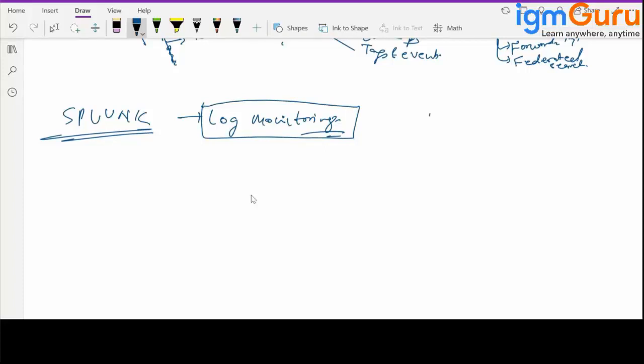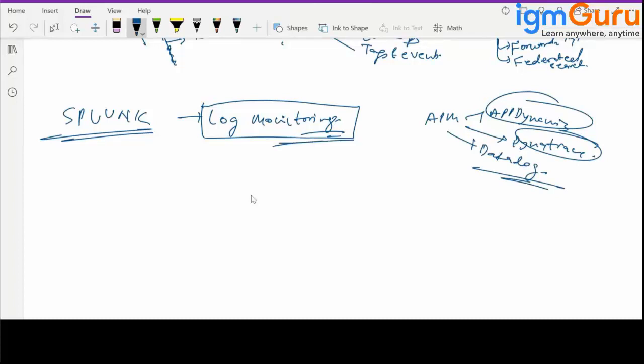If you talk about APM application performance monitoring, you have multiple like AppDynamics, Dynatrace, and a lot of other tools which are specialized in the APM part, or Datadog. But for log monitoring we have Splunk that is the expert or you can say the market leader.